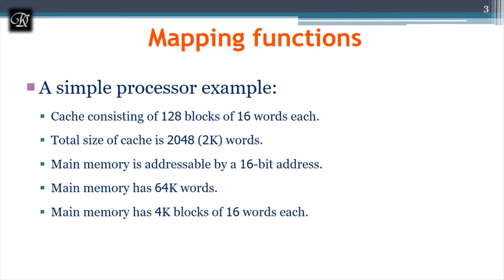The given address lines relate to offset and block number, as shown in this slide. The configuration in the textbook is: cache has 128 blocks of 16 words, meaning the total cache size is 2KB (2048). To get this: 128 blocks × 16 words = 2048. Alternatively, 2048 ÷ 16 = 128 blocks.